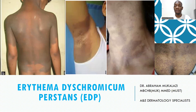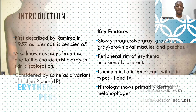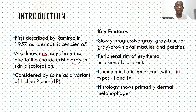Hello everyone. As we summarize the lichenoid dermatoses, today we shall cover a few of the last segments in this section. Today we shall look at erythema dyschromicum perstans, and maybe one or two more disorders in this particular disease category. Erythema dyschromicum perstans is also called ashy dermatosis.